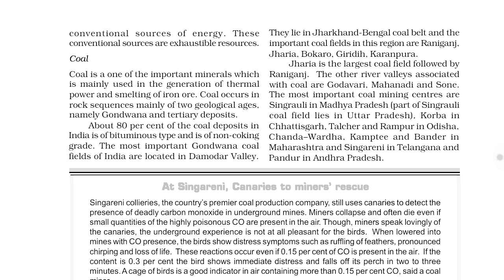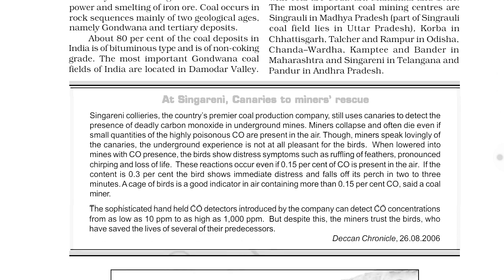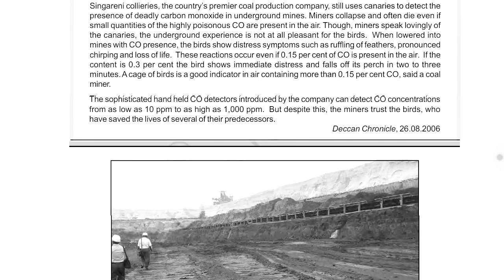For distribution: anthracite is found in Jammu and Kashmir; bituminous is found in Jharkhand, West Bengal, Odisha, Chhattisgarh, Madhya Pradesh; and lignite is found in Tamil Nadu — Neyveli is the place where it is found. Other places are Makum, Jainji, and northeastern parts. You must note that Jharia is the largest coal field, followed by Raniganj — this is something to remember. The map of coal fields is also very important.